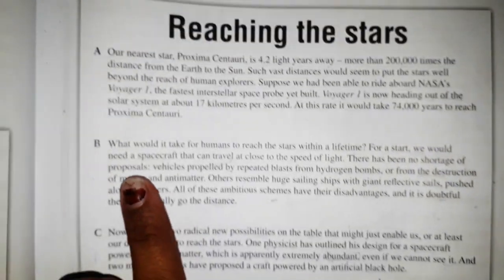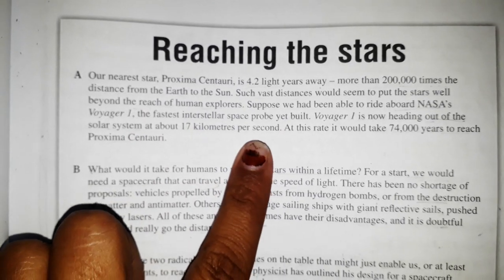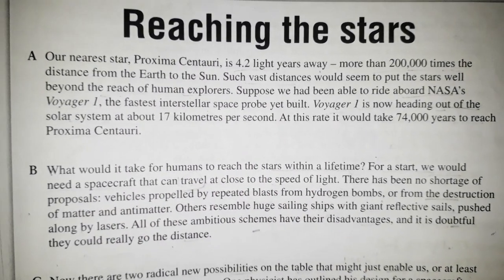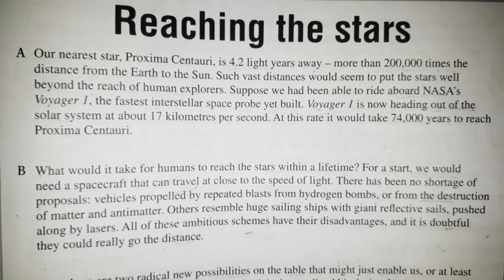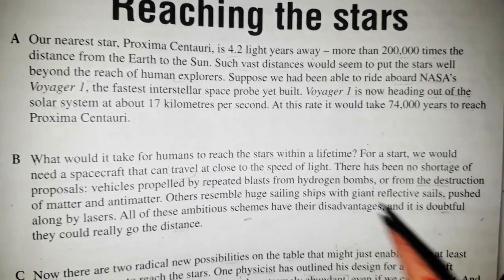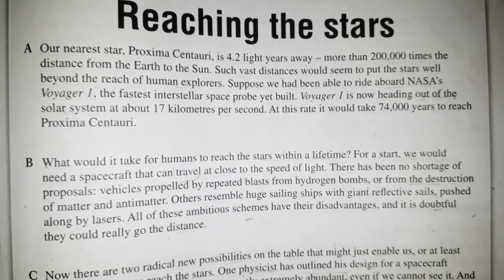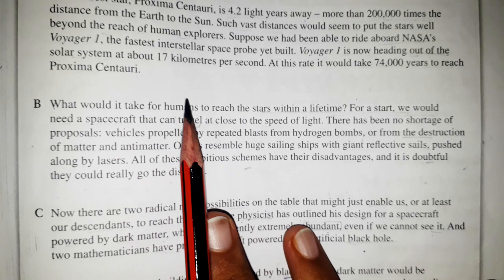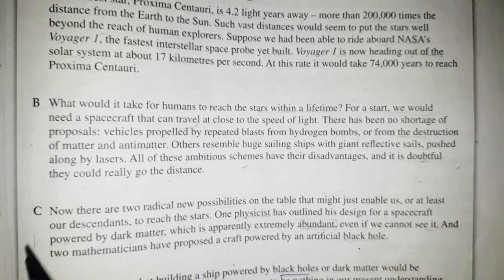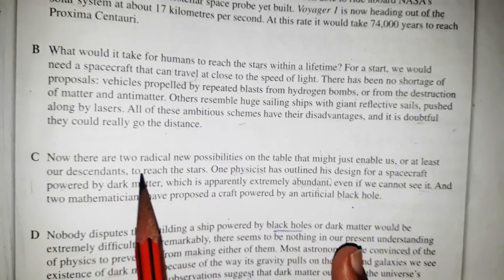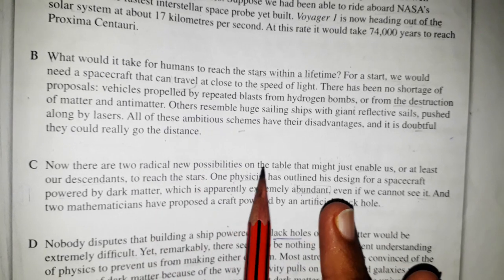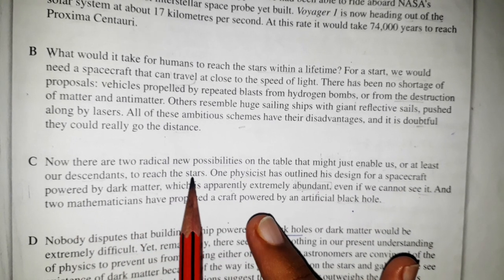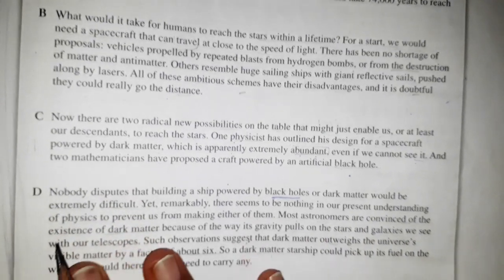We go through our most important words which are collision and dark matter. In the first paragraph, there's no word like dark matter or collision. You can see they talk about the Earth to Sun distance. Next one: what would it take for humans to reach the stars within a lifetime? It's all about stars. Now there are two radical new possibilities on the table. This one is also not about what we want to see.